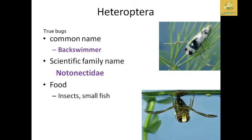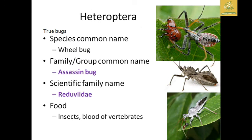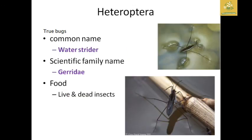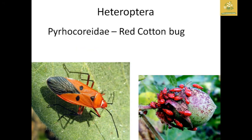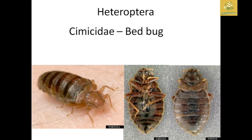The back swimmer is an aquatic predator feeding on insects and small fish, belonging to family Notonectidae. Wheel bugs are assassin bugs that prey on small insects and blood of vertebrates, belonging to family Reduviidae. The water strider belongs to family Gerridae and feeds on live and dead insects. Pyrrhocoridae includes the red cotton bug, a major pest of cotton which forms red color formations in cotton bolls. Cimicidae includes the bed bug, a household pest of humans.